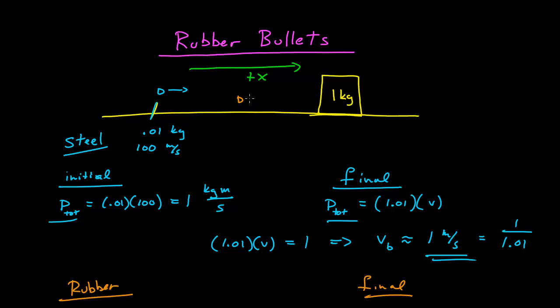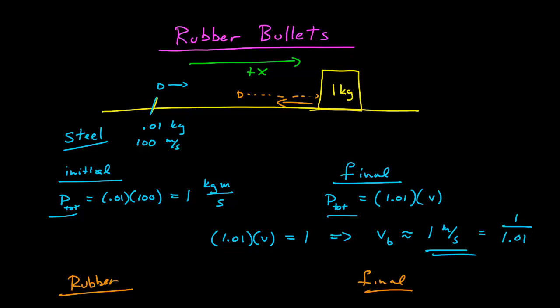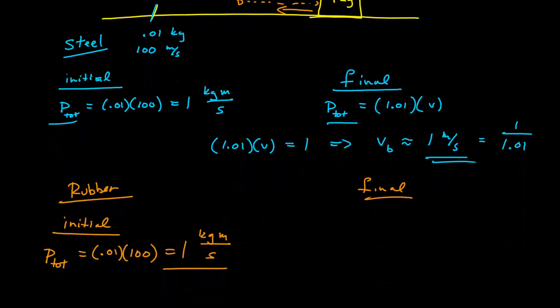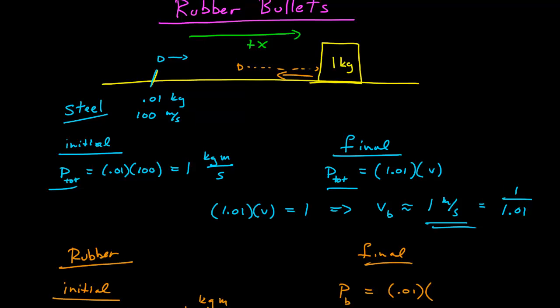So for a rubber bullet, now, it's not going to stick into the mass, it's going to bounce off. So in our final momentum, we're going to have the momentum of the bullet, which is the mass of the bullet, 0.01, times the velocity of the bullet. The key thing, since it's bounced off, is that it will be in the negative x direction.